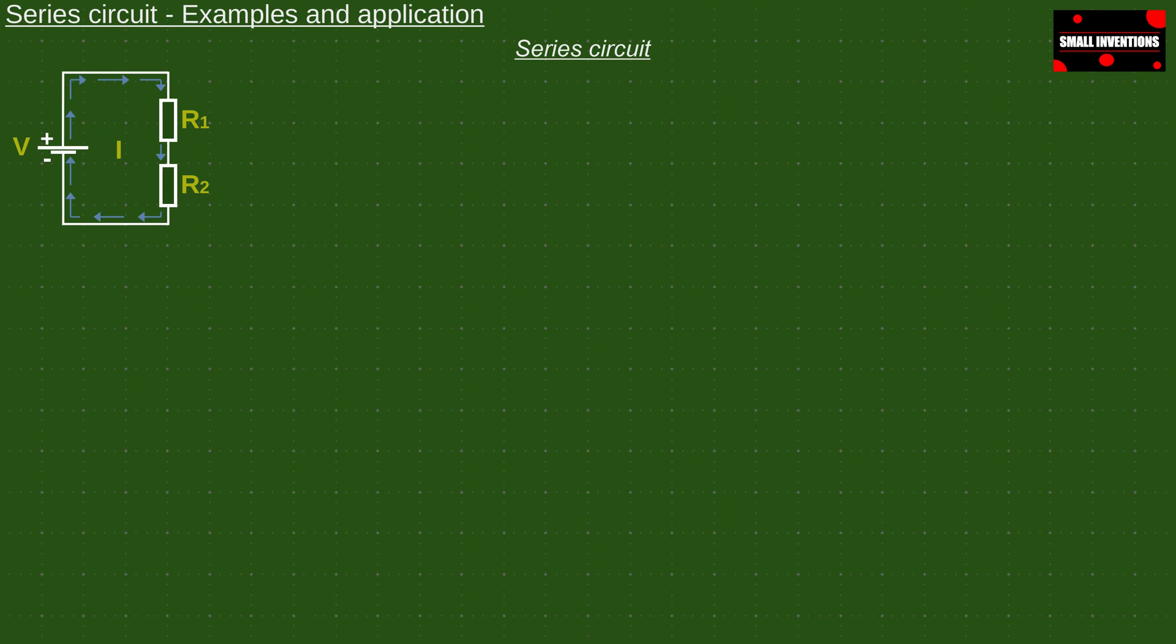The first thing we can notice is that the same current flows through both resistors. To calculate this current we use Ohm's law.